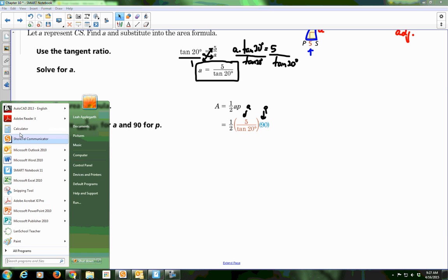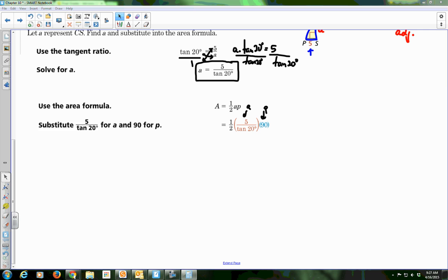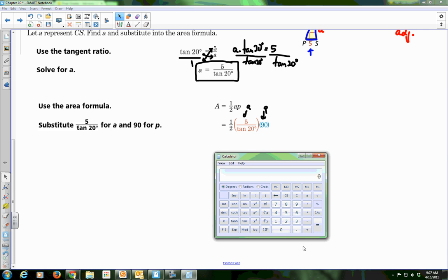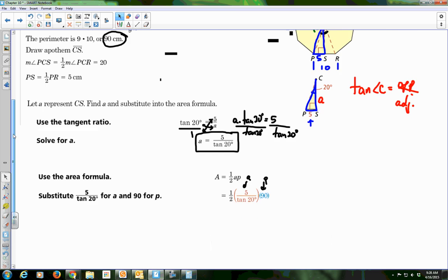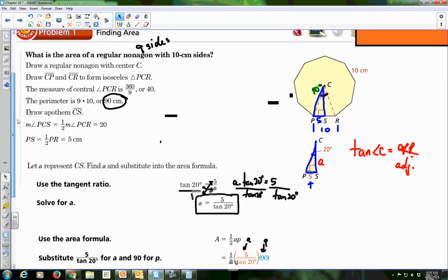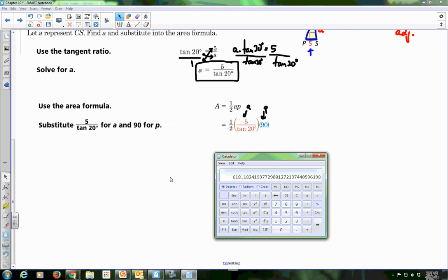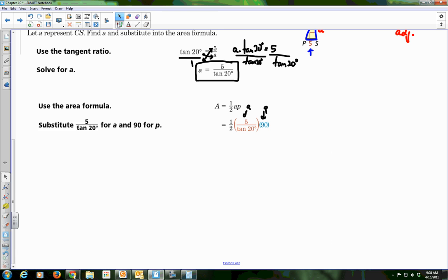Let me show you how I would put this in my calculator. I would go 0.5 times parenthesis, 5 divided by the tangent of 20, close parenthesis, times 90, equals, so 618.18. And let's just take a look at our formula, it doesn't say our rounding, so we'll round it to the nearest square centimeter. So that is 618 centimeters squared.